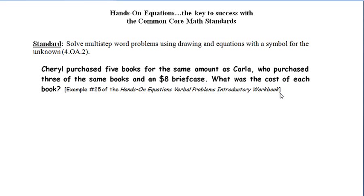The problem says Cheryl purchased five books for the same amount as Carla, who purchased three of the same books and an $8 briefcase. What was the cost of each book?